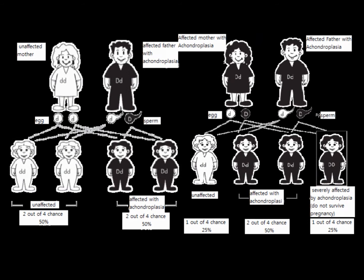If you look at this picture, children who have only one parent affected by achondroplasia have a 50% chance of being affected too. On the other hand, if both parents are affected by achondroplasia, there is a 75% chance of the child being affected, and one of those outcomes usually won't survive pregnancy.